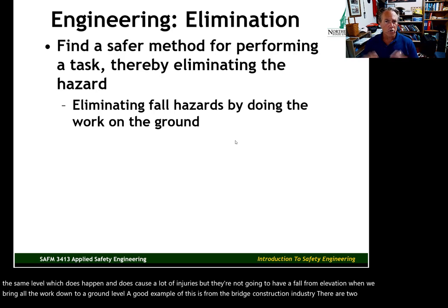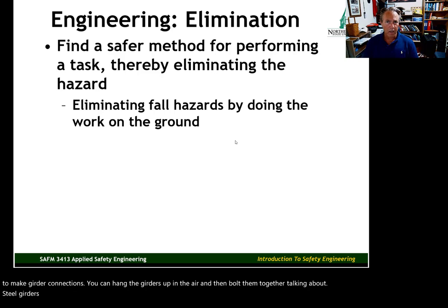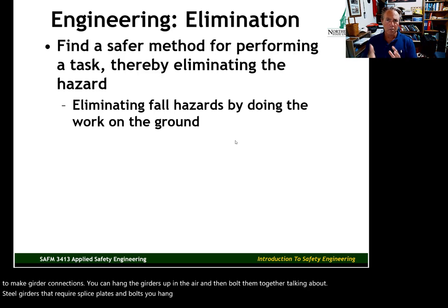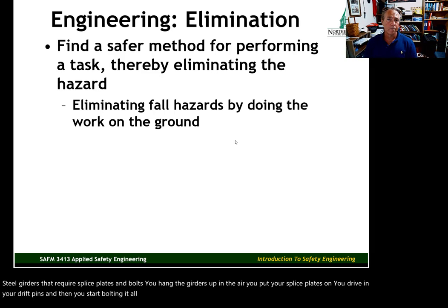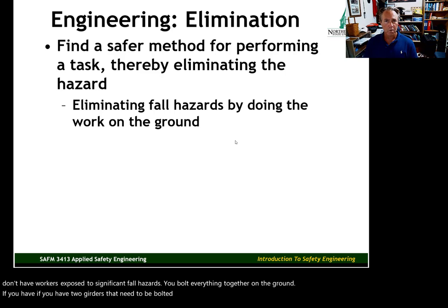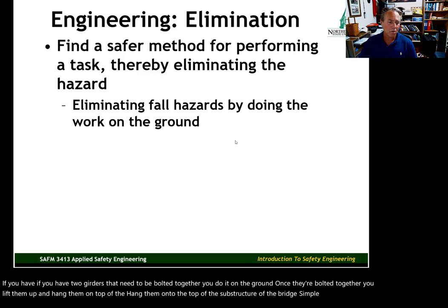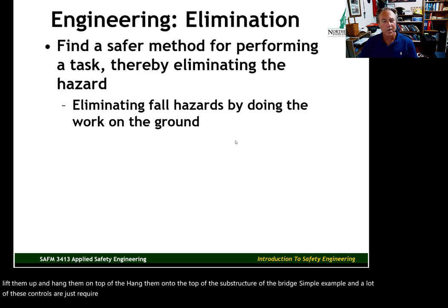A good example comes from the bridge construction industry. There are two ways to make girder connections: you can hang the steel girders up in the air and bolt them together with splice plates — or the better way, you bolt everything together on the ground first. Once bolted together, you lift them up and hang them onto the bridge substructure. A simple example requiring critical thinking: is there a safer way?